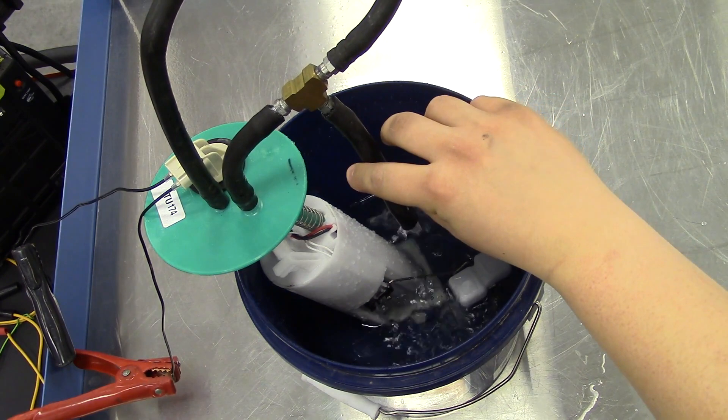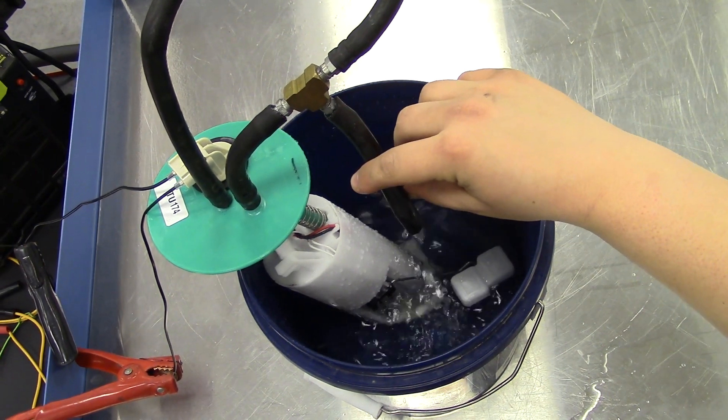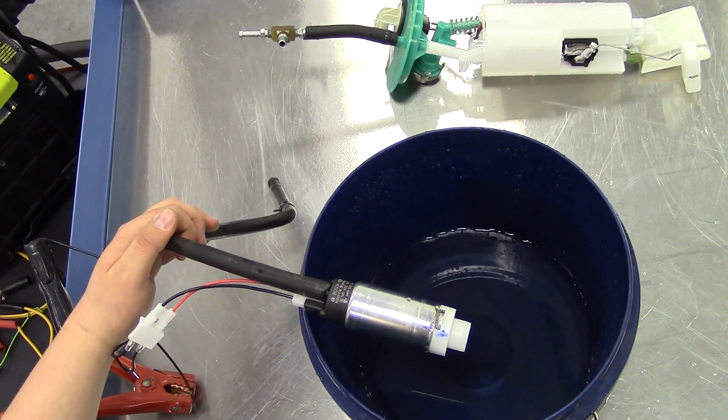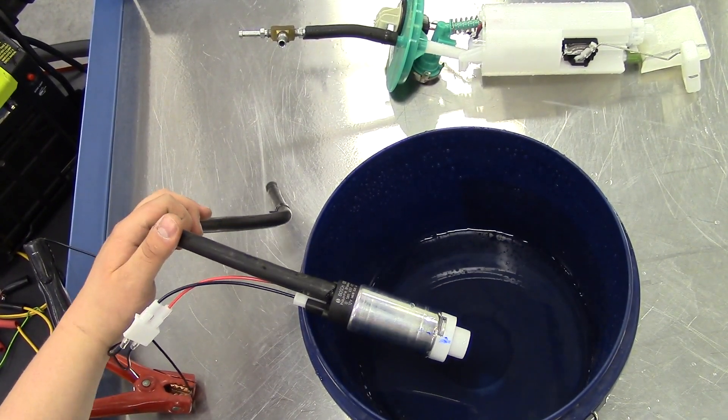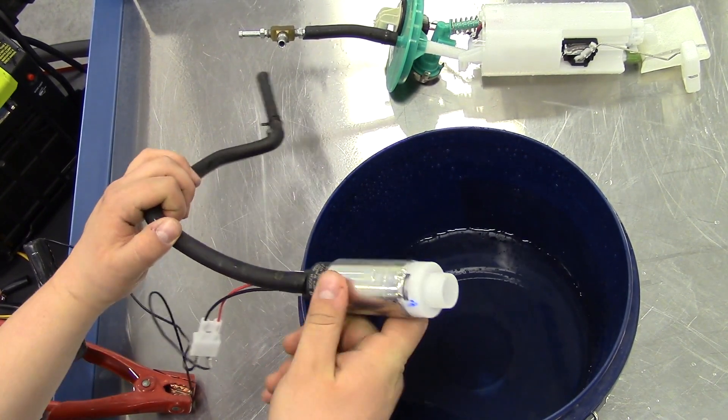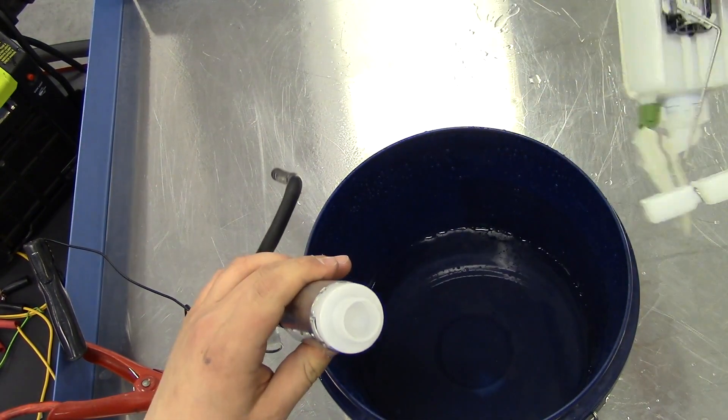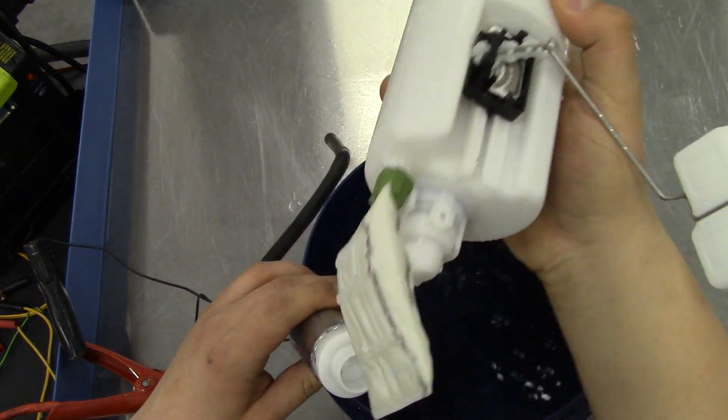The spec for this vehicle, a 2000 Dodge Caravan with a 3.3 liter motor, is about 55 PSI. Now that you've seen the system operate overall, I'm going to demonstrate just what the pump does. This is the inlet to the pump. This is what the sock on the bottom of the fuel pump would normally be connected to, that square piece.